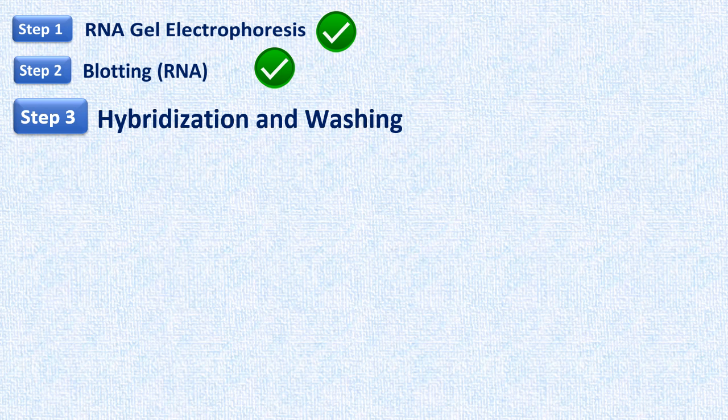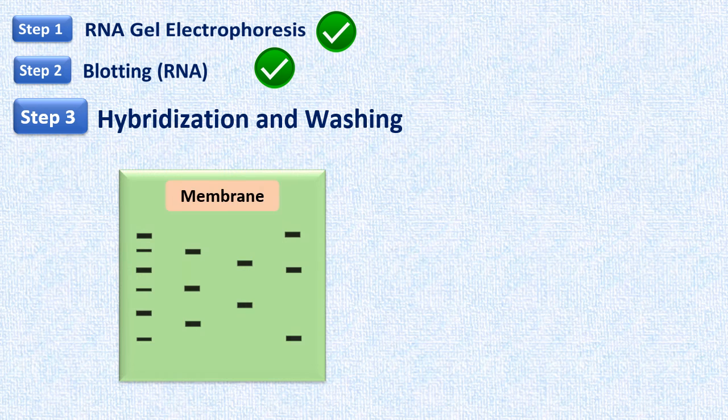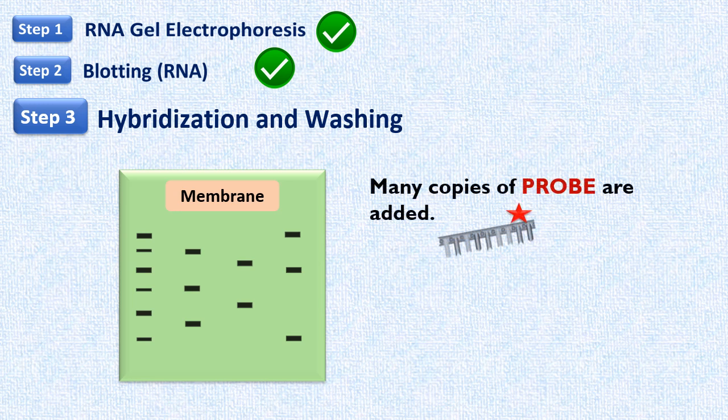The third step involves hybridization with probe and washing. Suppose these bands are the RNA molecules on the nylon membrane. For the detection of these RNA molecules, first, we need a probe that will specifically bind to these target RNA molecules.